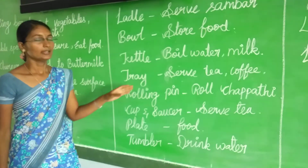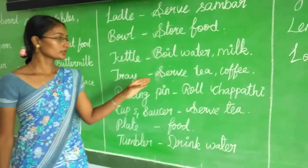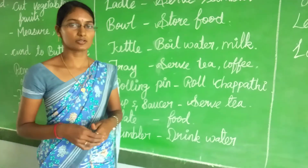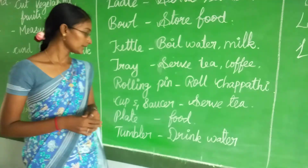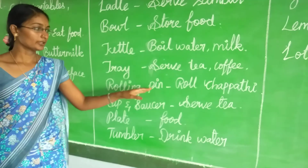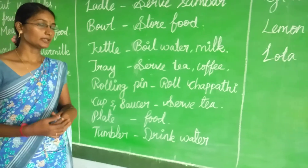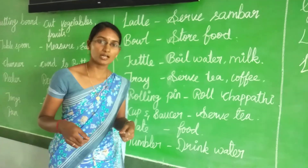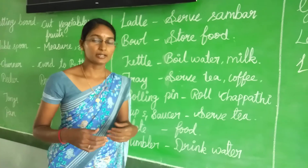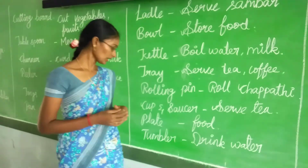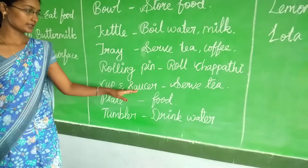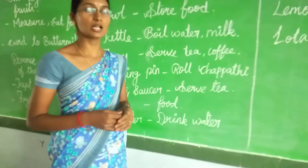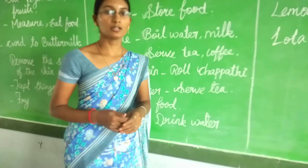Next, tray. Tray is used to serve tea, coffee, juice, and other items. Next, rolling pin. Rolling pin is a wooden tool used to roll out chapati or dough. Next, cup and saucer. It is used to serve tea or coffee.